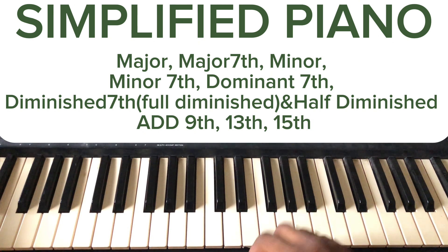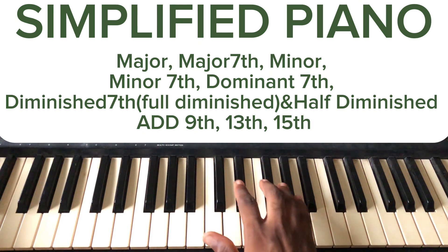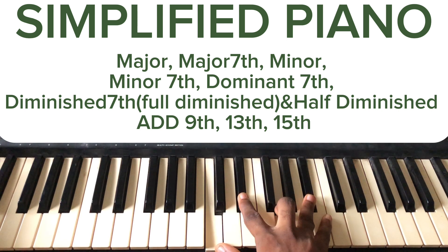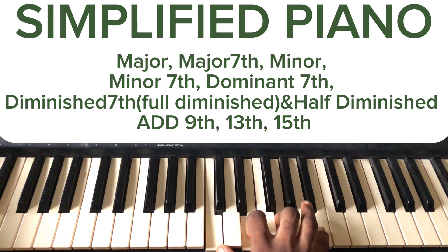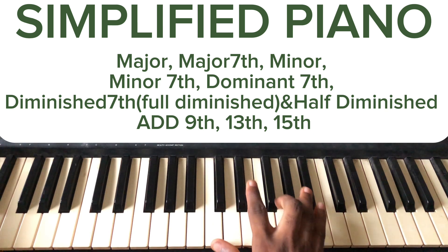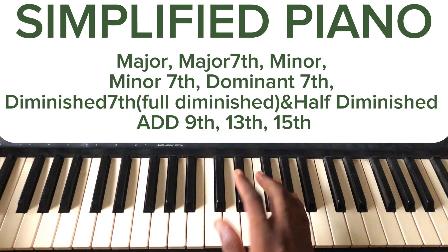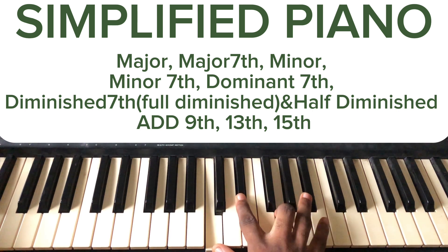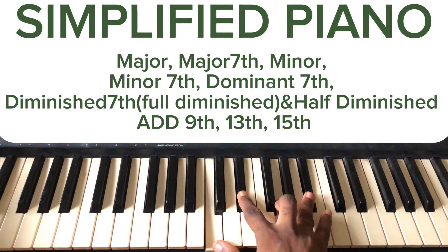Now let's move to the minor seventh. The minor is built with one, flat three, five. When I add the Ta — the flat seventh — to the minor triad, it gives me a minor seventh chord. So Do, Mo, Sol, Ta is a minor seventh chord.